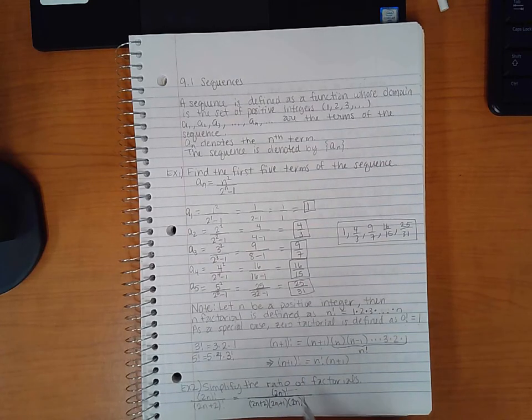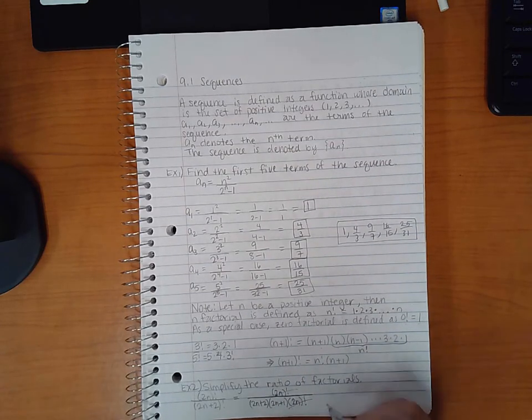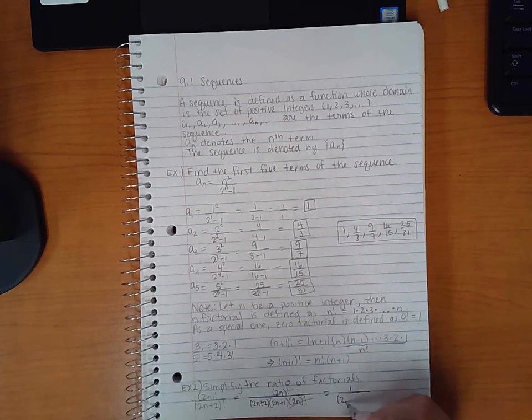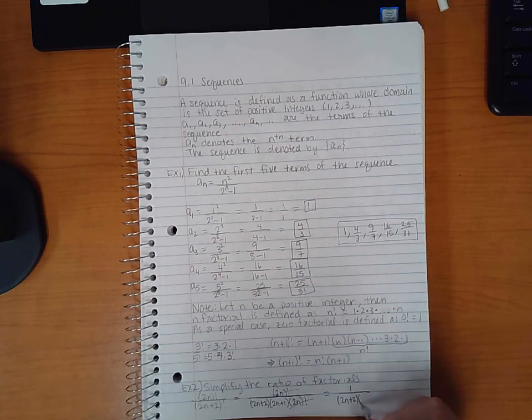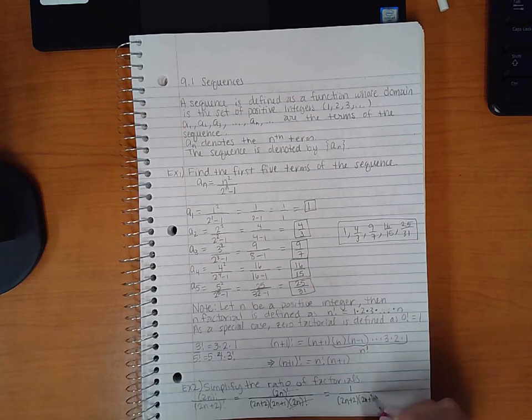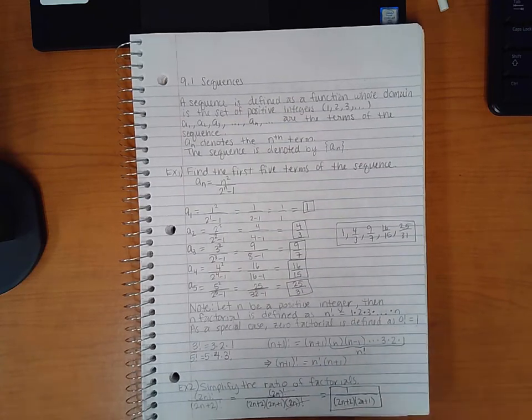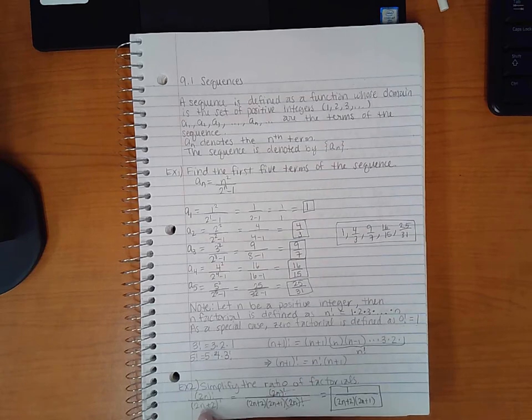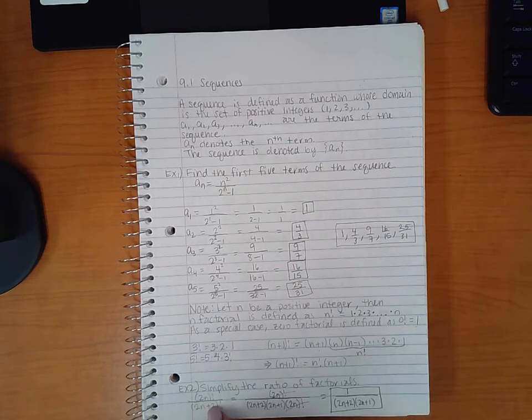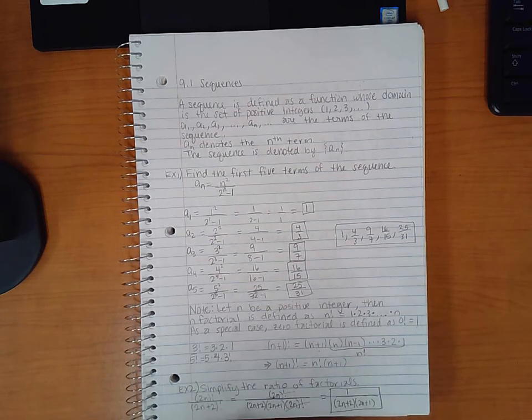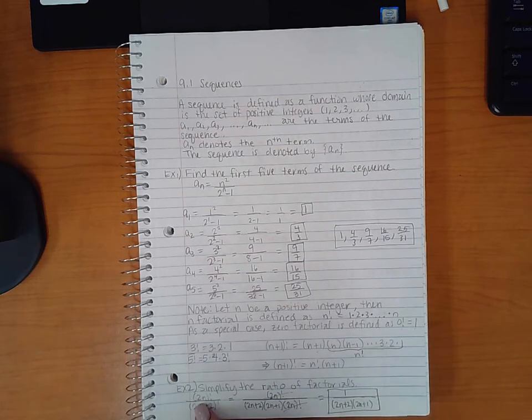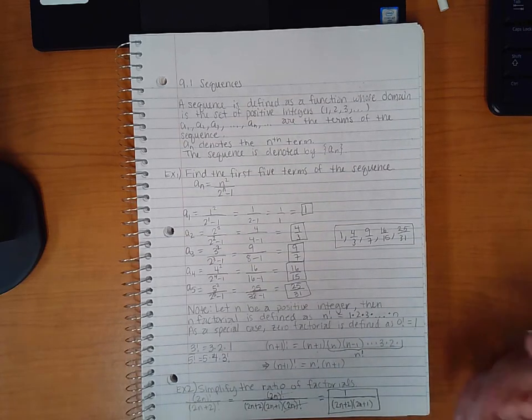So all of these factors will reduce with all of these factors, leaving me with just 1 over 2n plus 2 times 2n plus 1. So that is how you reduce something with factorials. It's better to break up the factorial that has a bigger expression to begin with, and keep breaking it down until you get to the smaller one, and therefore they'll reduce.